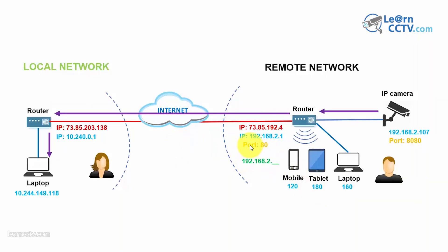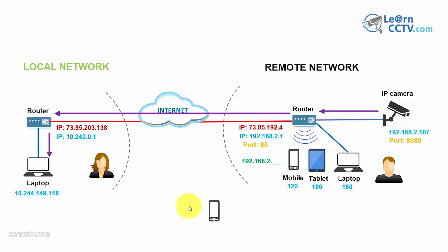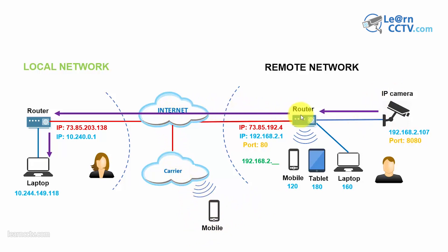There is also something important: port 80 is already used by the router, so you can't assign it to the camera — that would cause a conflict. You need to go to your camera and change the port from 80 to 8080. Cameras and DVRs come with port 80 by default, so you need to change it. The number 8080 is just an example; it could be another number. Mobile access via a carrier works the same way — traffic arrives at the router on port 8080 and gets forwarded to the camera.